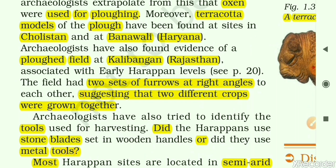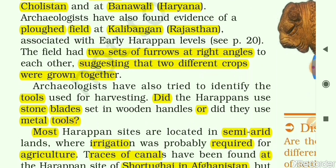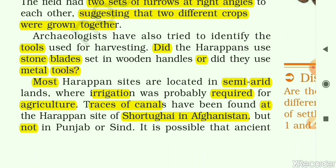Archaeologists have tried to identify the tools used for harvesting. Did the Harappans use stone blades set in wooden handles, or did they use metal tools? For ploughing, they had the plough and the bull, but for harvesting — cutting the ready crop — the question remains whether they used stone blades with wooden handles or metal tools. It is not very clear exactly what they used.